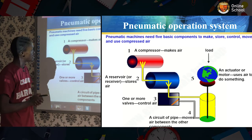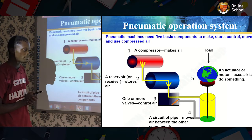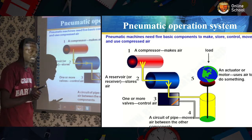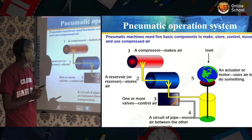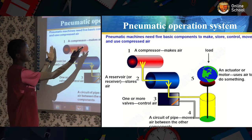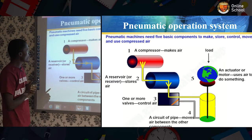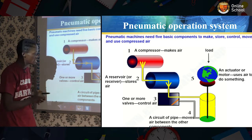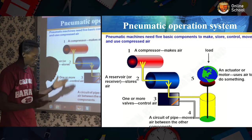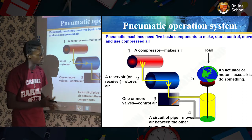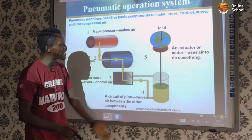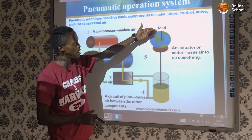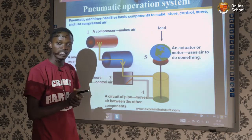Pneumatic operation system. This animation shows how the pneumatic system works. Pneumatic machines need five basic components: first, the compressor, which compresses the air; second, the reservoir for storing the air; third, the valve, which opens or closes for the air to move; fourth, the circuit of pipes, which is the channel for the air to move through; and fifth, the actuator or motor, which does the work.